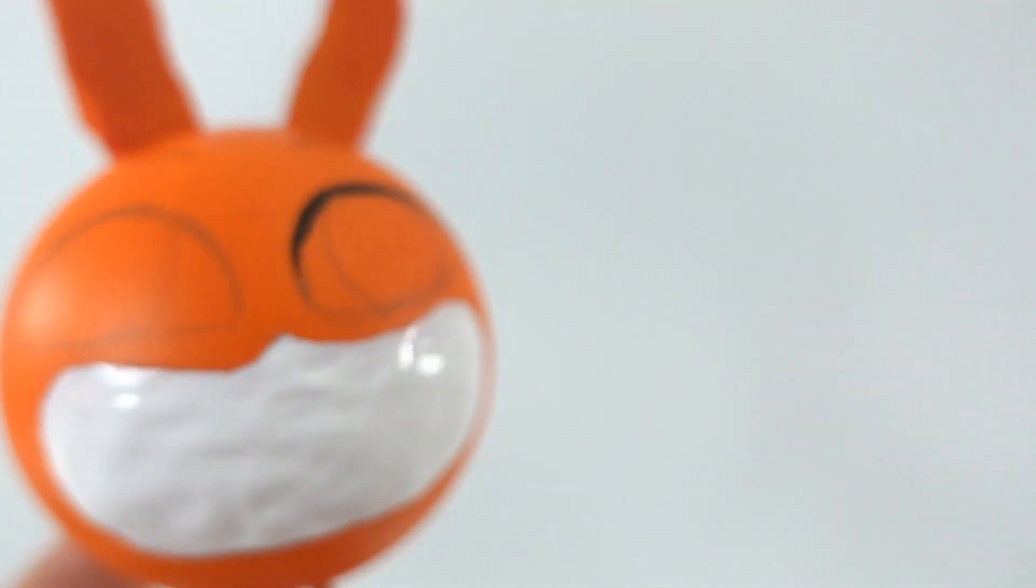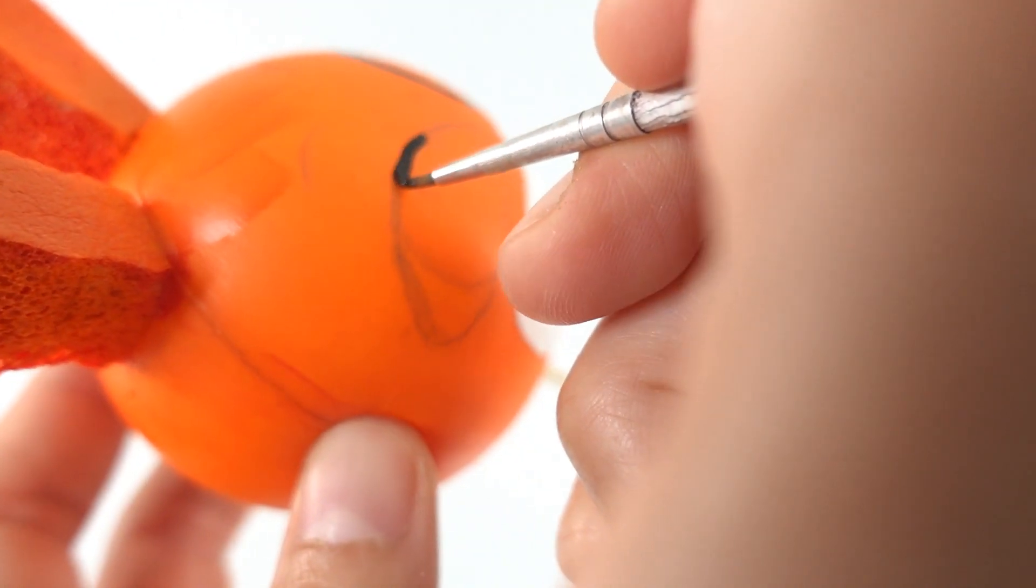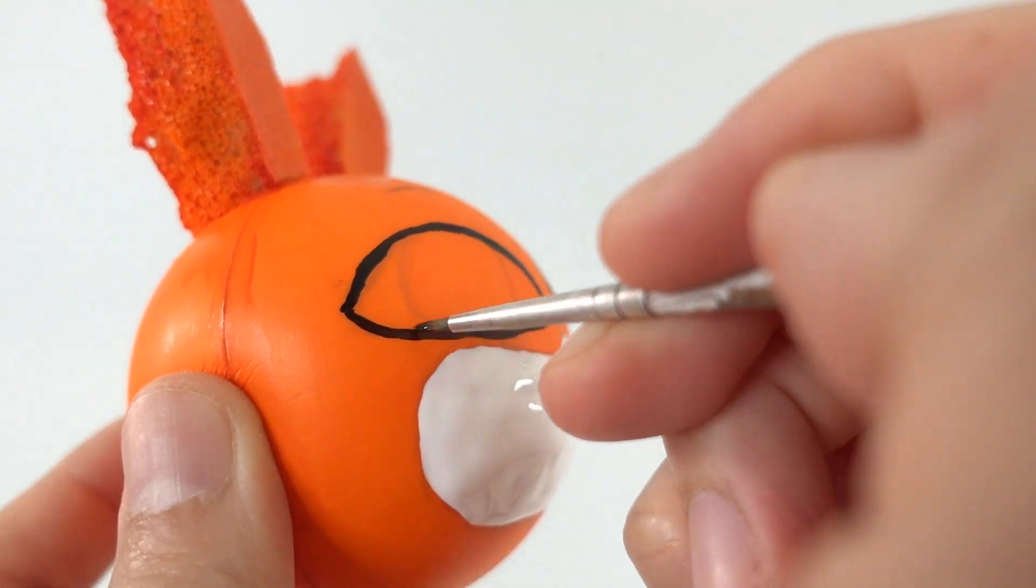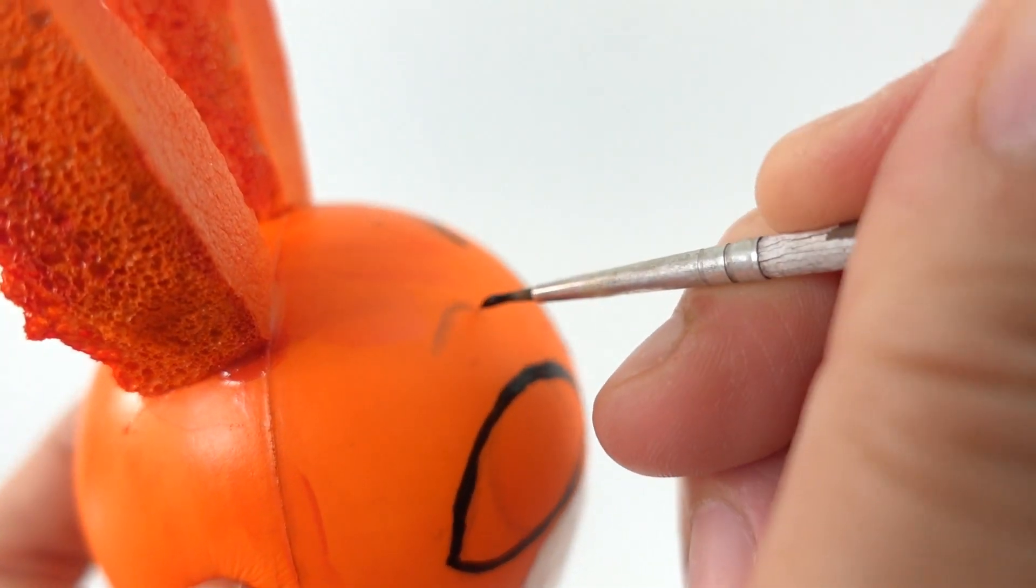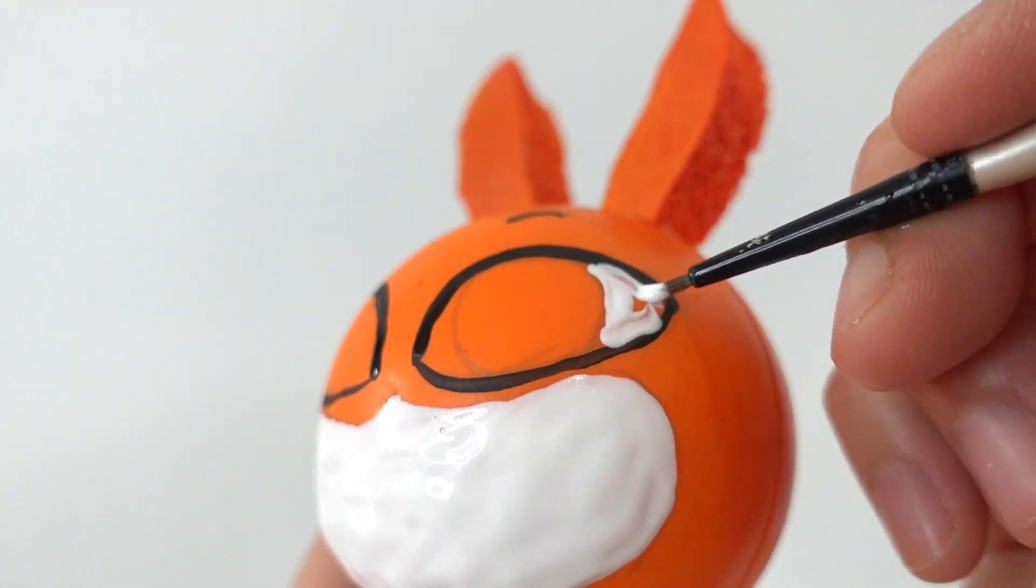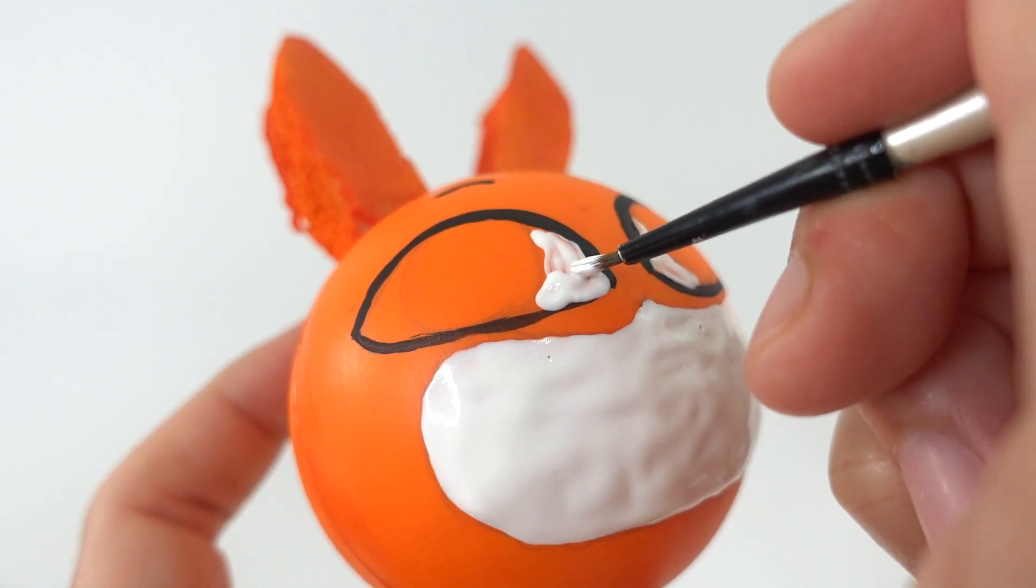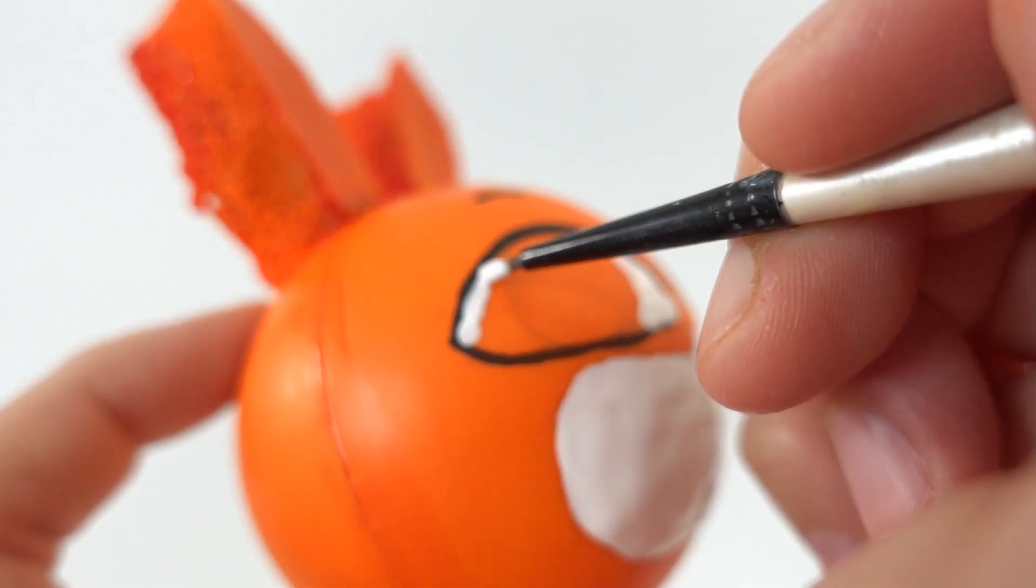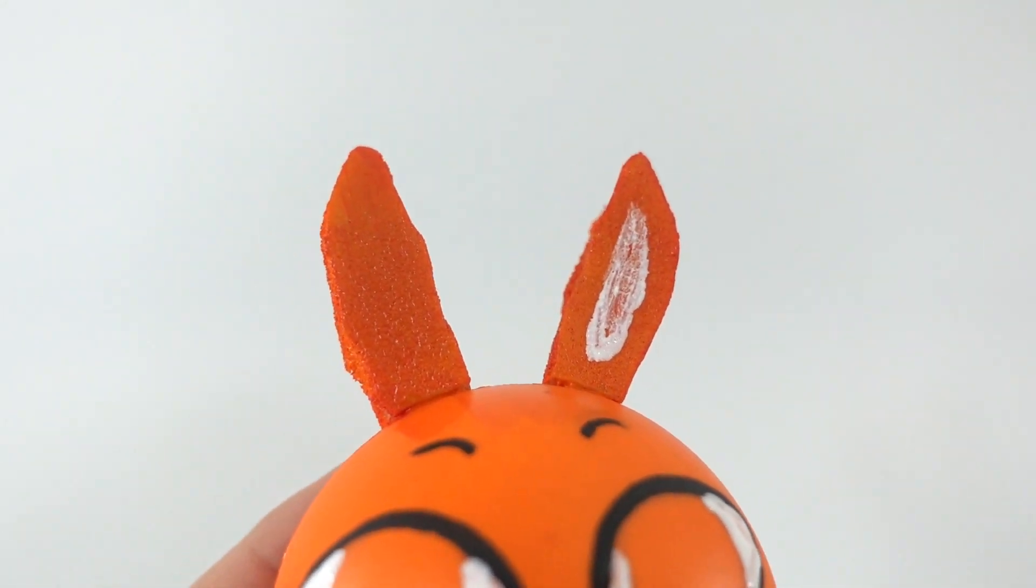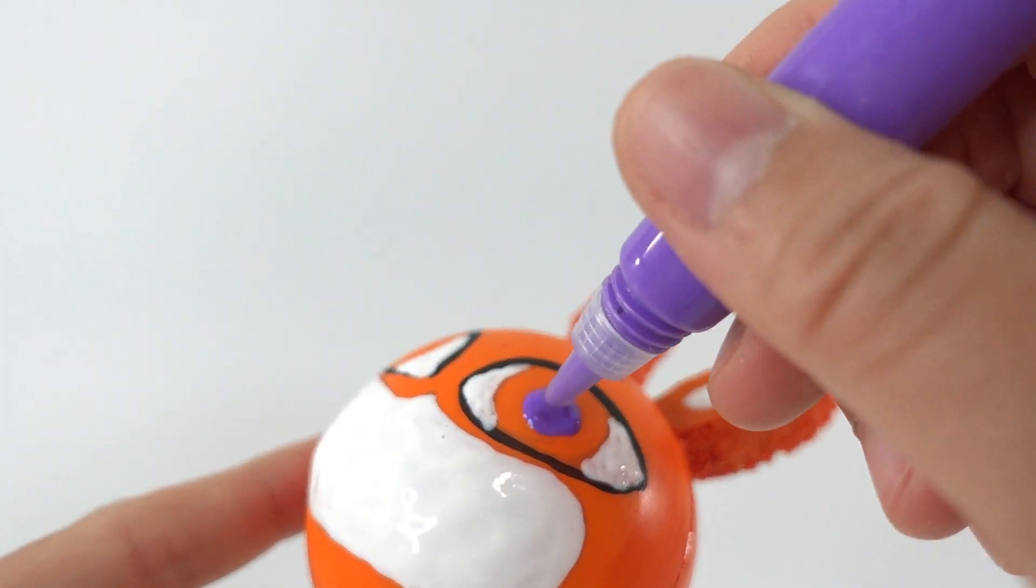We'll use the black and outline the eyes and eyebrows. Add white to the corners of each eye. Paint the inside of the ears white. And paint the irises purple.